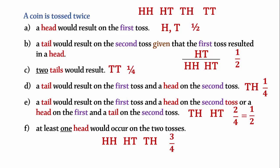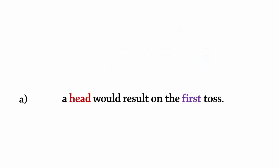Now let's use a tree diagram together with a few probability notations to answer these questions. Part A again: what is the probability that a head would result on the first toss? On a tree diagram, the first toss of the coin looks like this, and the probability is clearly 1/2 or 0.5.